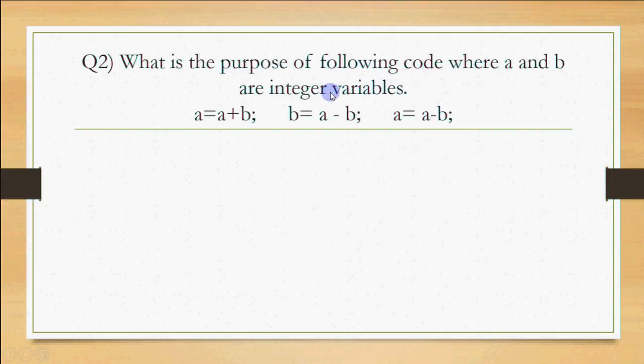Second question: What is the purpose of following code where A and B are integer variables? We have written these 3 statements: A equals A plus B, B equals A minus B, A equals A minus B. Let's assume A is 10 and B is 20. A equals A plus B, so 10 plus 20 equals 30. B equals A minus B, so 30 minus 20 equals 10. A equals A minus B, 30 minus 10 equals 20.